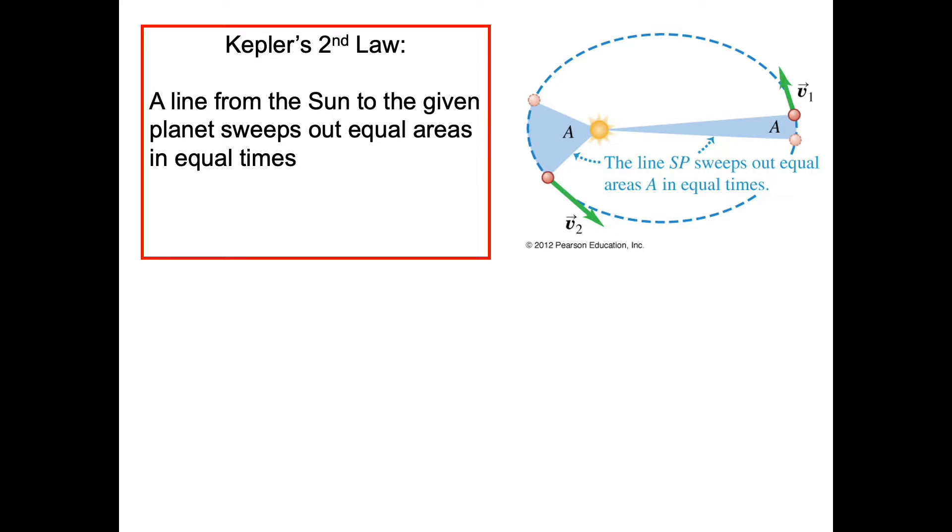Kepler's second law is the equal areas law. It says that a line from the sun to a given planet will sweep out an equal area in equal times. In the diagram that we have drawn on the right here, we have a planet with a fairly elliptical orbit. The planet sweeps across a larger distance when it's closer to the sun and a smaller distance over the same amount of time when it's further from the sun.